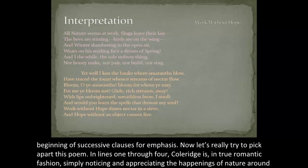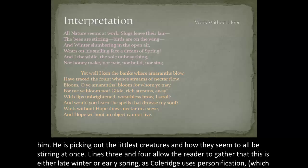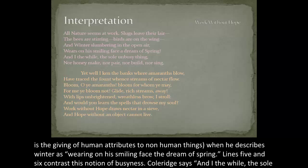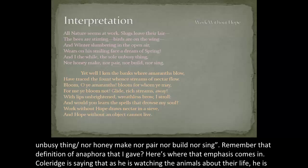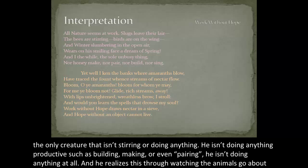Now let's really try to pick apart this poem. In lines one through four, Coleridge is, in true Romantic fashion, simply noticing and appreciating the happenings of nature around him, picking out the littlest creatures and how they all seem to be stirring at once. Lines three and four allow the reader to gather that this is either late winter or early spring, as Coleridge uses personification — the giving of human attributes to non-human things — when he describes winter as wearing on his smiling face the dream of spring. Lines five and six contrast this notion of busyness; Coleridge says he's the sole unbusy thing, not making honey, pairing, building, or singing — the only creature that isn't stirring or doing anything productive.